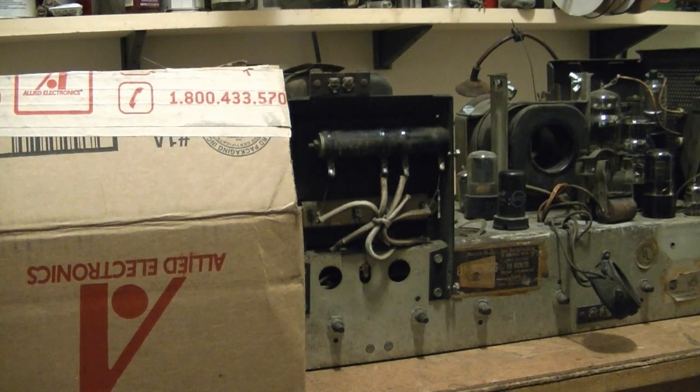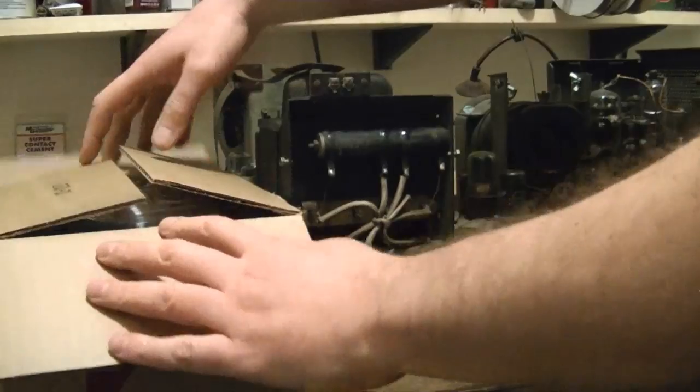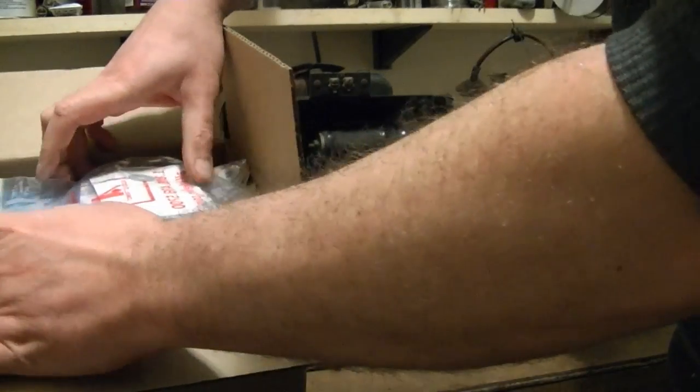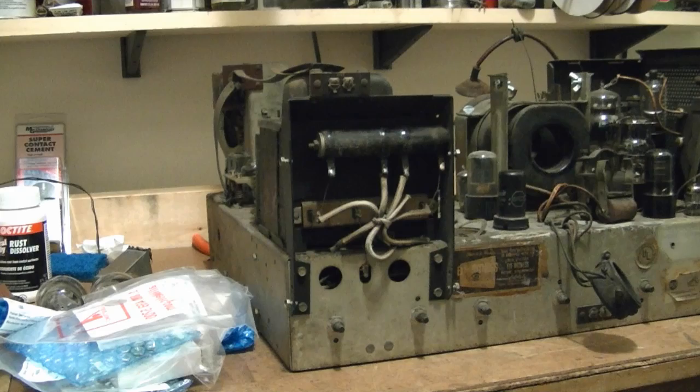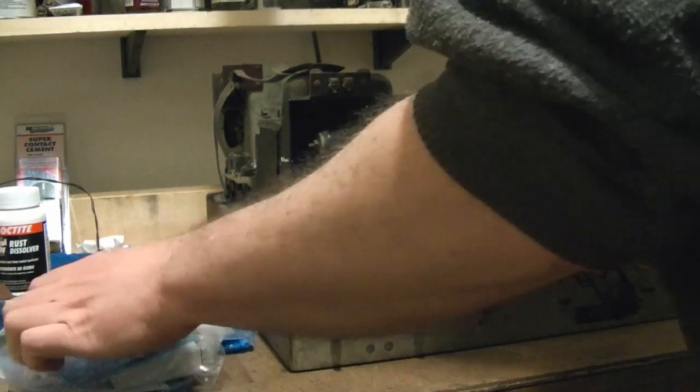My order from Allied Electronics has arrived, so let's see what all is in here. It's a pretty big box, but not a whole lot in it. All just power resistors and accessories for mounting them.